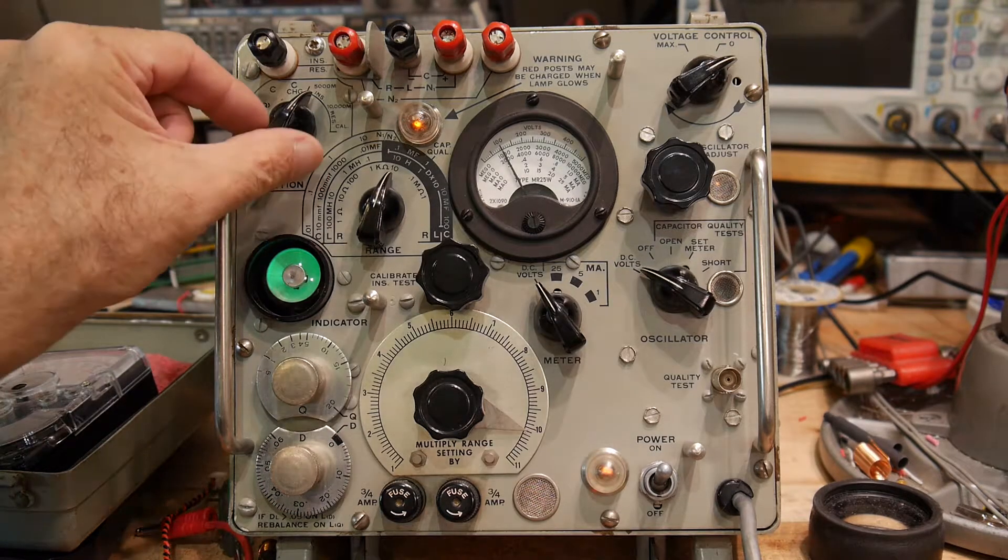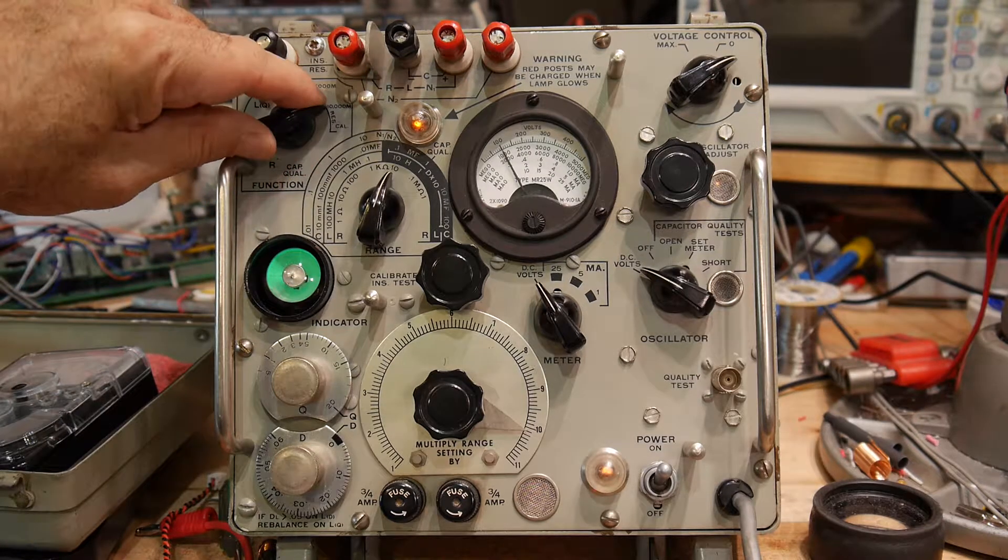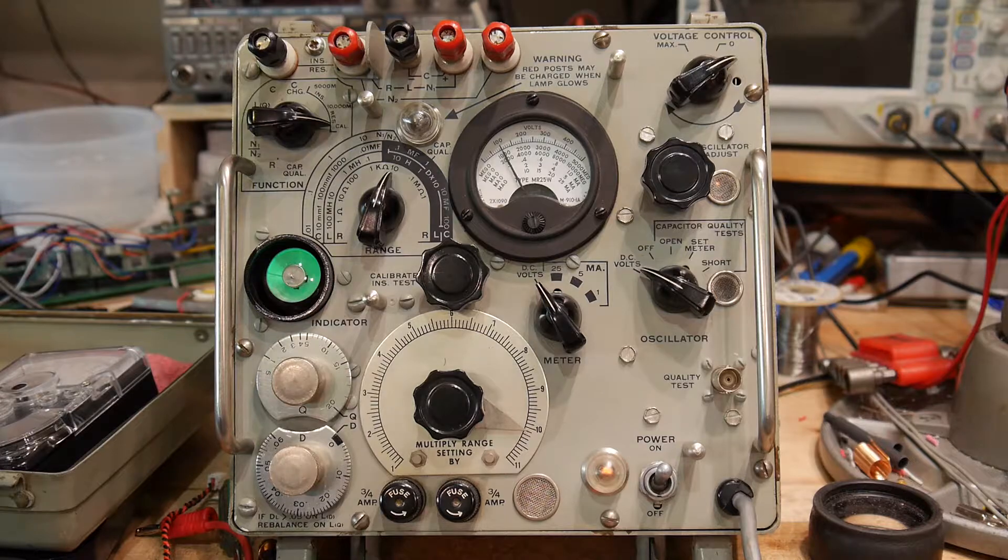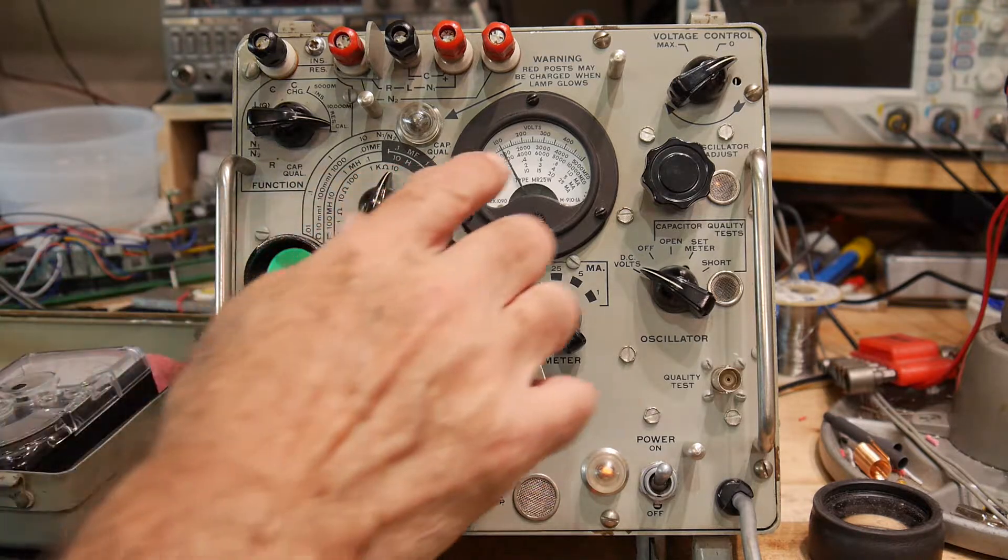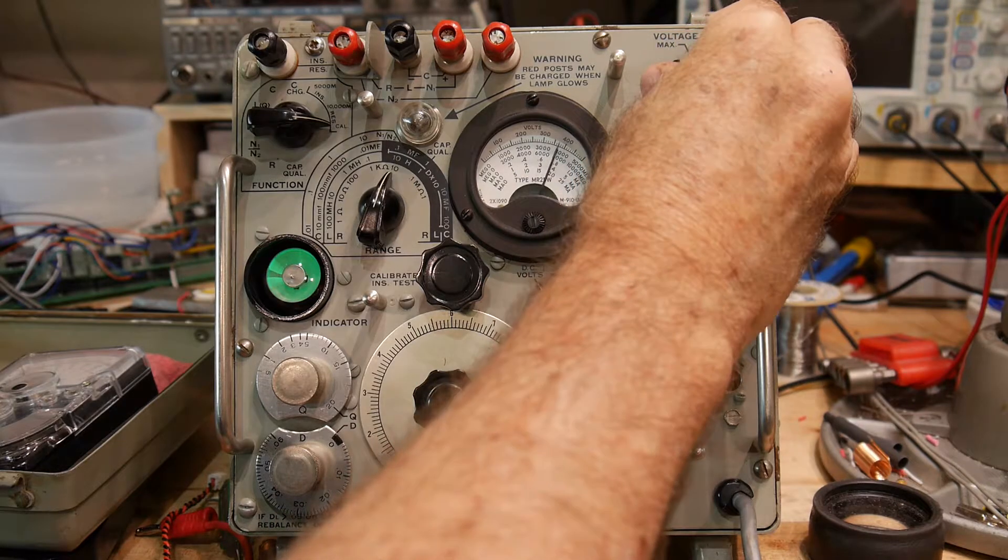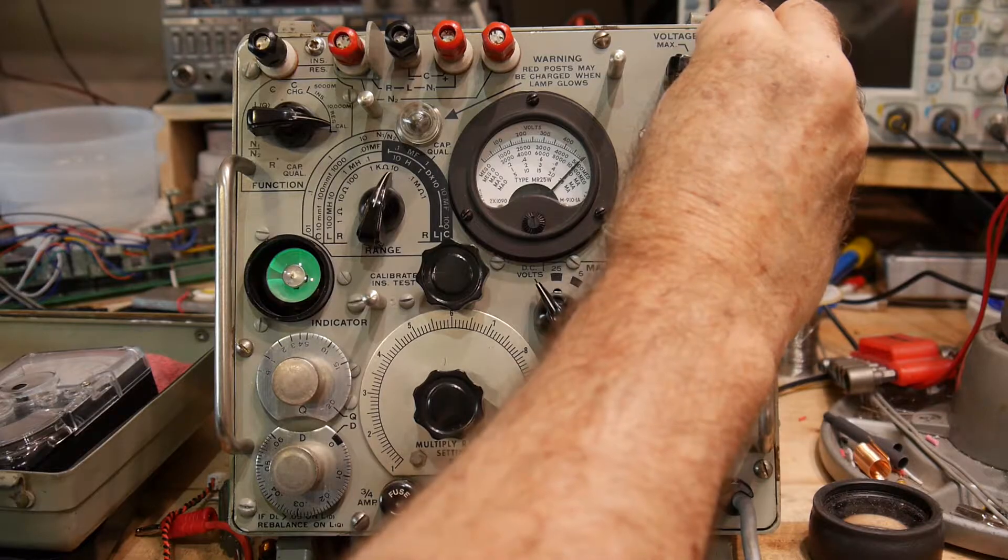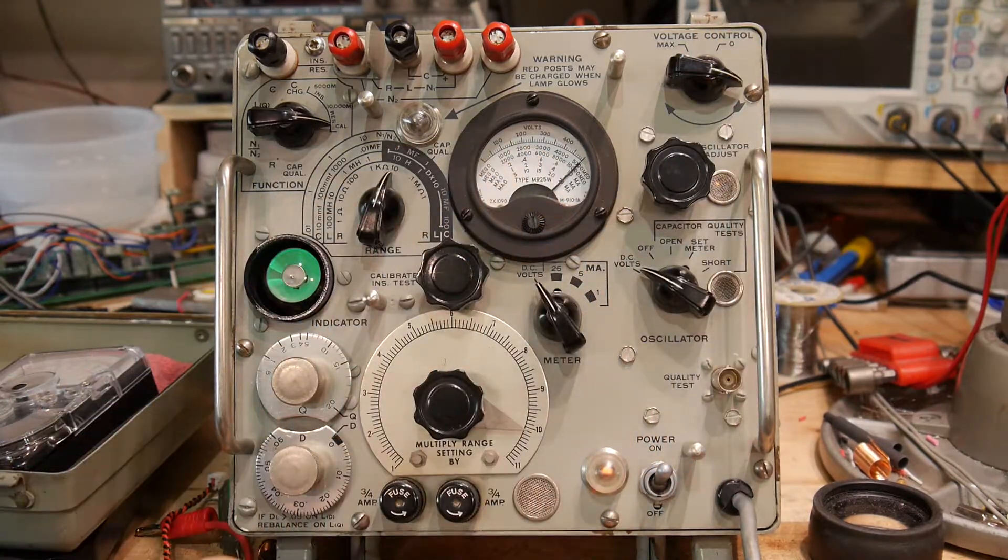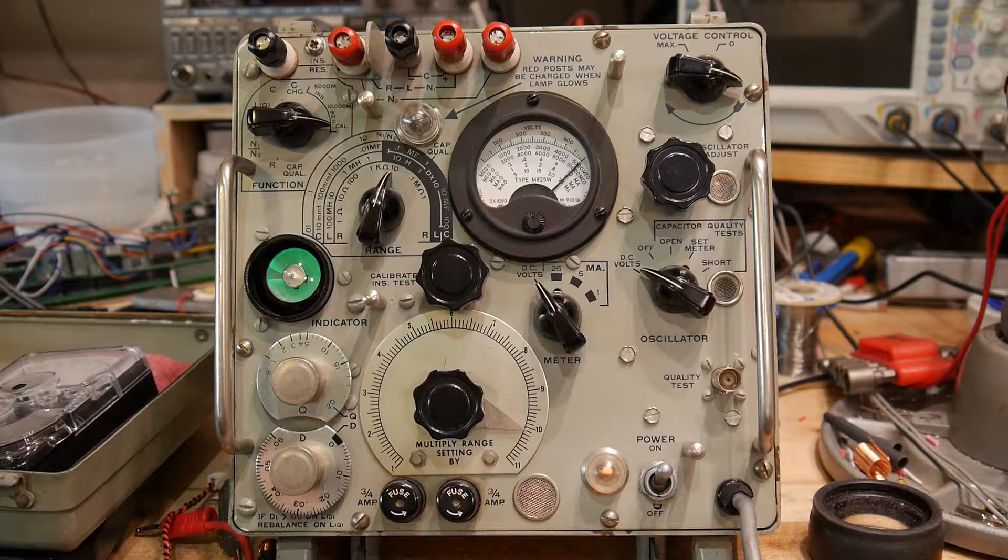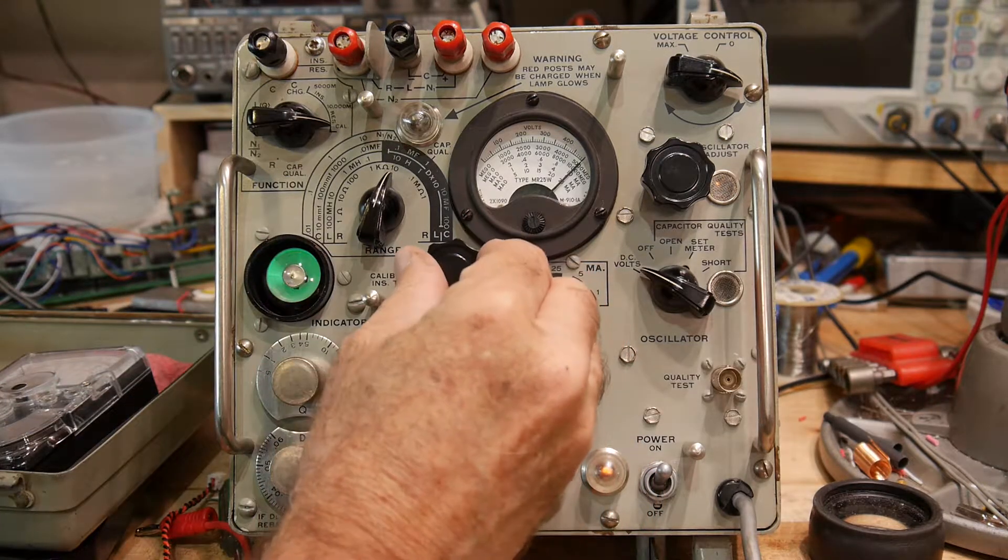So the way you use this is there are two settings: 5000 mega ohms and 10000 mega ohms, and calibrate. So you put it on calibrate and then set the voltage to 500, so we peg the meter here at 500. Then we look at the 6E5 tube.